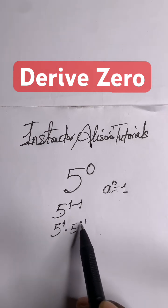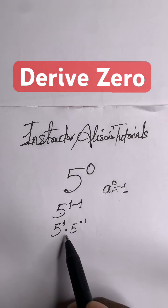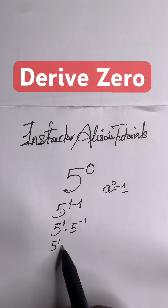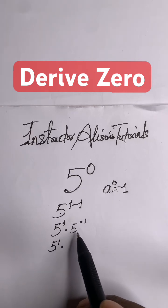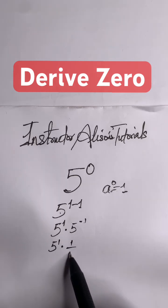So you have 1 plus negative 1, which is the same thing. This is the same as 5 to the power of 1 times 5 to the power of negative 1. According to negative exponents, this will be transformed to 1 over 5.